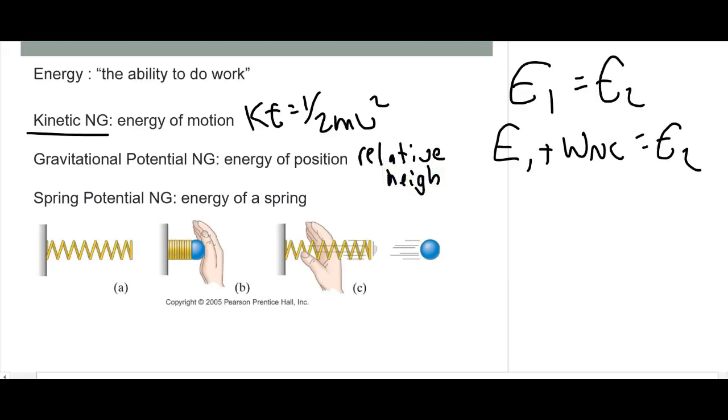So what do I mean by that? Well, I can have two people standing at the top of a cliff, and I could say this is height equals zero, so neither of those have potential energy.